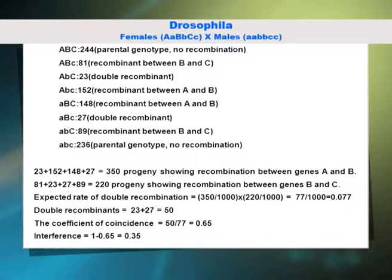However, there are actually only 50 double recombinants. The coefficient of coincidence is therefore 50 divided by 77, equal to 0.65, and the interference is 1 minus 0.65, equal to 0.35.